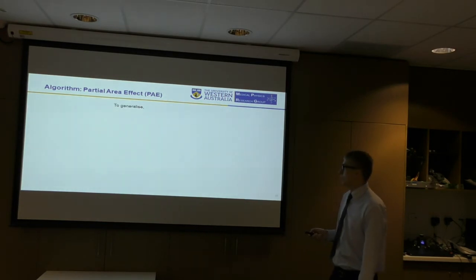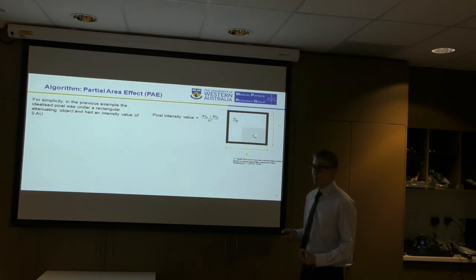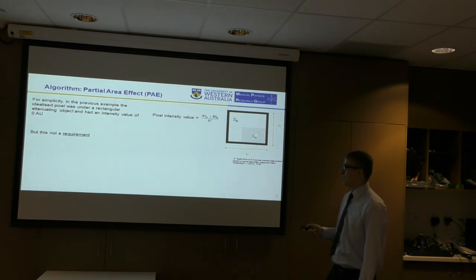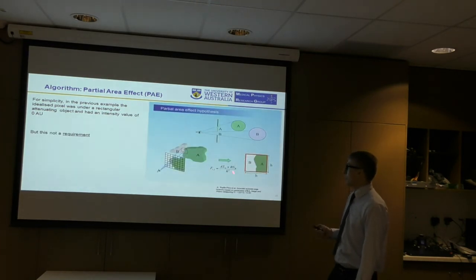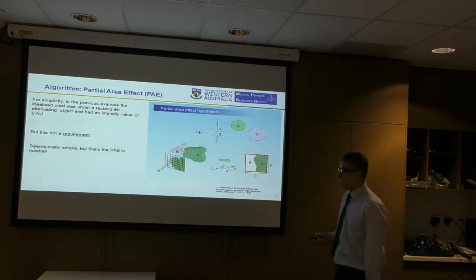To generalize, pixel intensity values can be given by this equation, and for simplicity, in the previous example, the idealized pixel was under a rectangular attenuating object, and when it was completely covered, the intensity value was zero arbitrary units, but this doesn't necessarily have to be the case. The pixels underneath an edge could have a value other than zero. This is probably a better descriptive picture in the future. It's a reasonably simple idea, but that's the partial area effect in a nutshell.